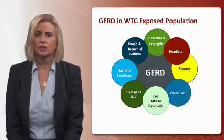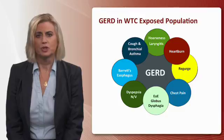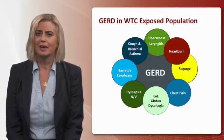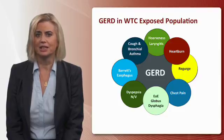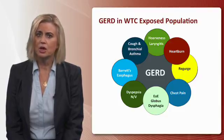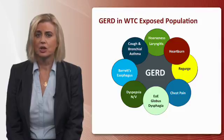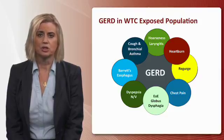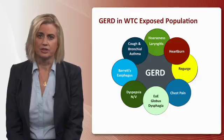GERD in the World Trade Center population has been a persistent and common problem. This graphic shows the interrelationship with many symptoms seen in this population — including chest pain, cough, bronchial asthma, hoarseness, laryngitis, dyspepsia, nausea and vomiting, or Barrett's esophagus, which has the potential to lead to esophageal cancer.